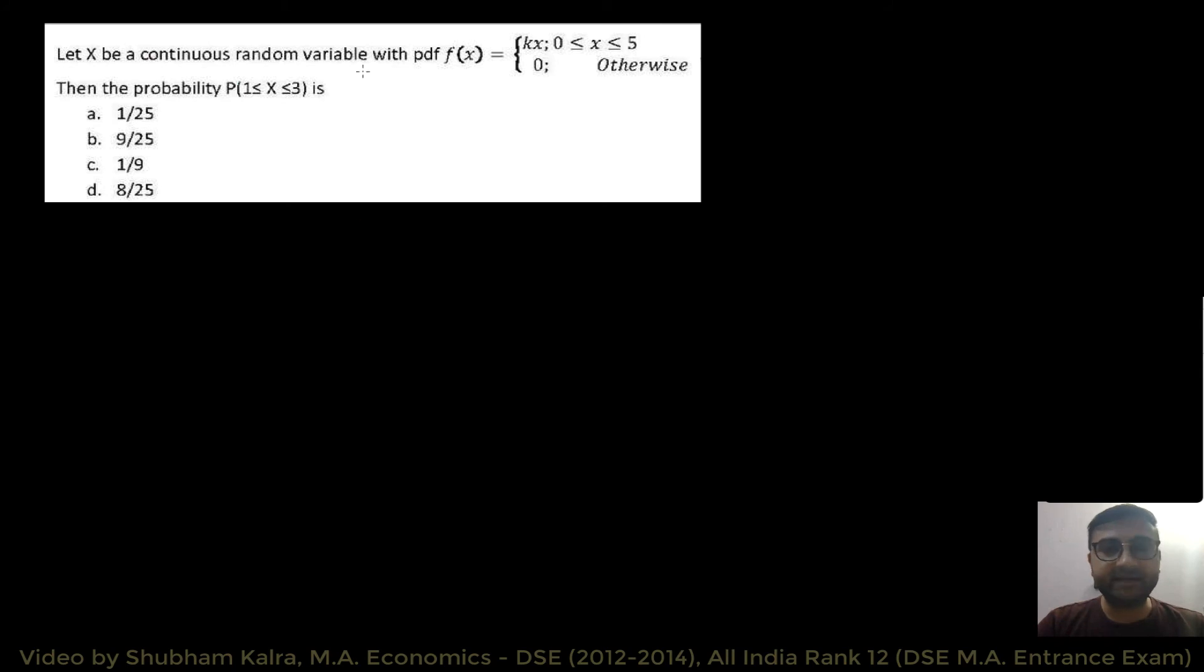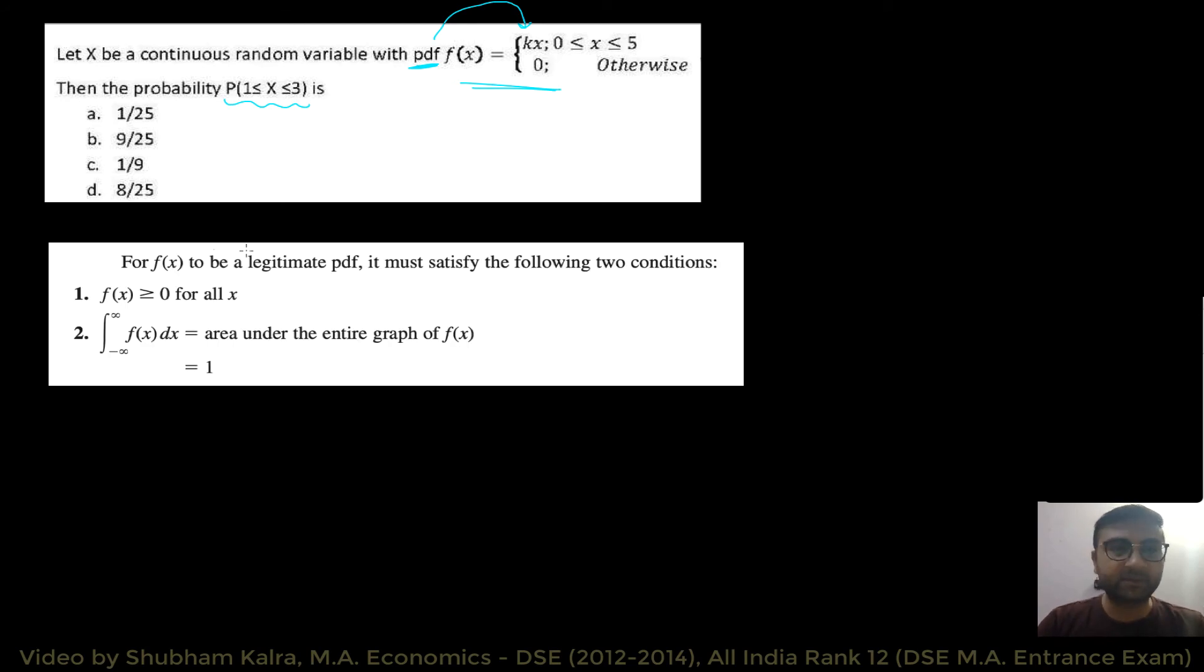Let x be a continuous random variable with pdf this. And we have to find the probability ki jho x hai, woh one and three ke beech mein hai. Dekhu, ye probability nikalne se phele, tumhye apne probability density function ko complete karna hooga. Jaisak ki tumhye yaa dhek sakte ho, probability density function me k likha hoa hai. So, before you could find the probability, hamei is k ki value nikalne hooghi. So, pehle usko nikalte hai. And k ki value nikalne ke liye mein in do conditions ko use karunga. So, for fx to be a legitimate pdf, it must satisfy the following two conditions. So, jho fx hai, woh greater than equal to zero hoona chahiye for all x. And agar hum fx ka integration karay, over all the values of x, too hume milega 1.